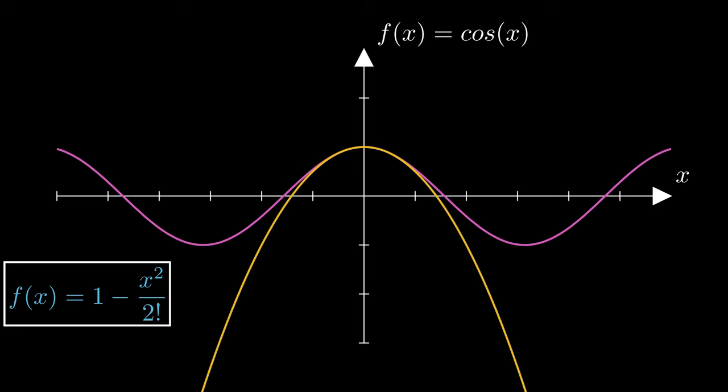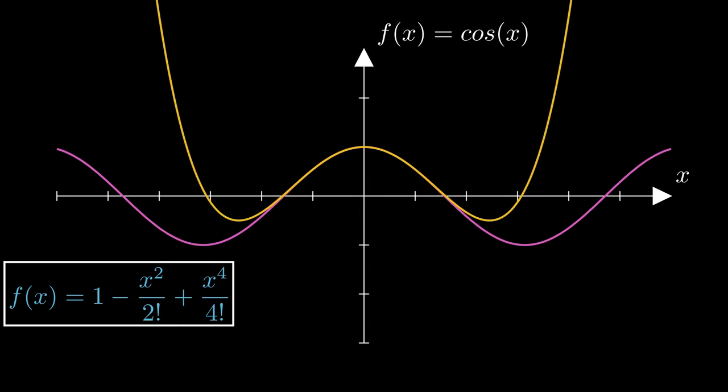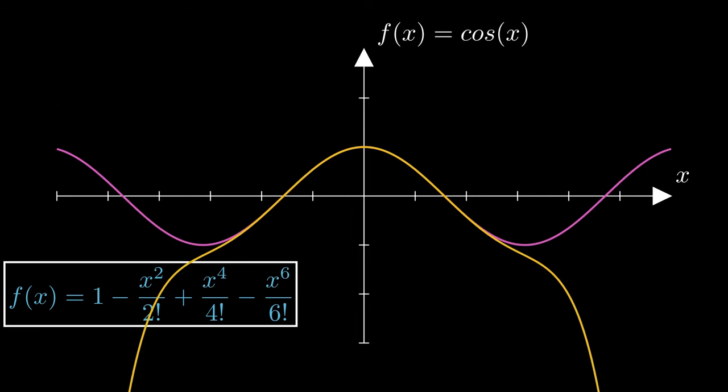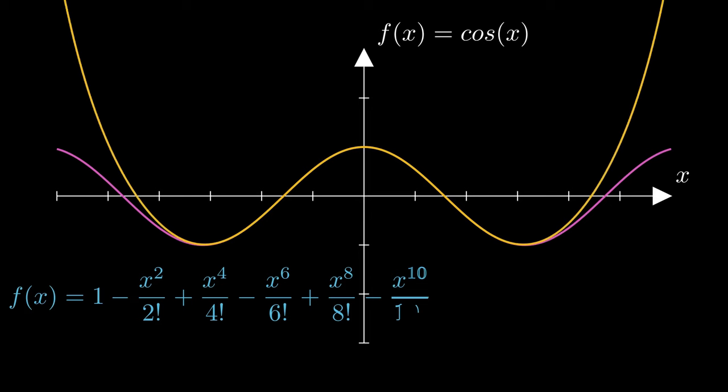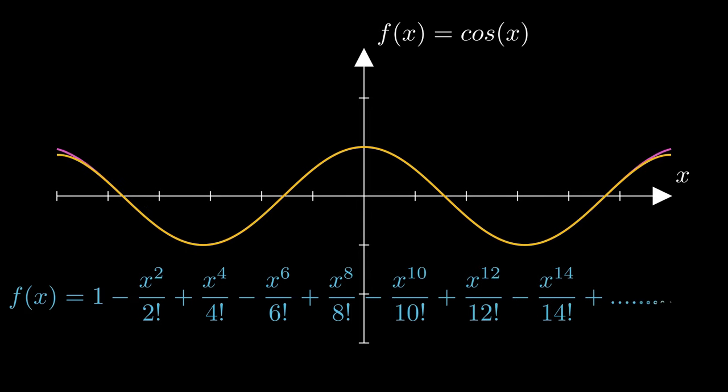You might observe that the curve starts approximating the cosine function around values close to 0. Add in another term and the approximation becomes better. If we keep adding more and more terms like this, the polynomial function almost equals the cosine function.